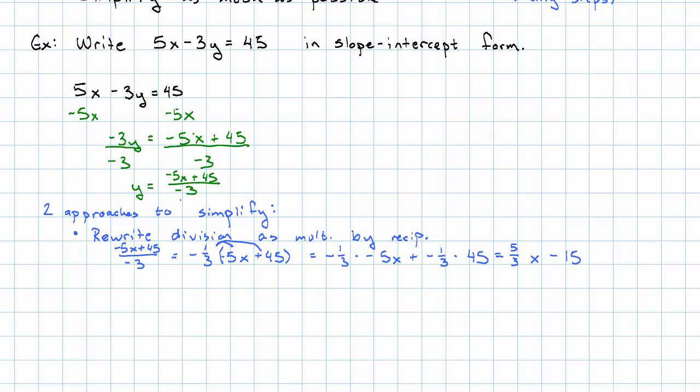I can also just think of this as distributing the division. So negative 5x plus 45 over negative 3. That's negative 5x over negative 3 plus 45 over negative 3. That's negative 5 over negative 3, that's 5 thirds x. 45 over negative 3, that's negative 15. Either way, I end up with y equals 5 thirds x minus 15.